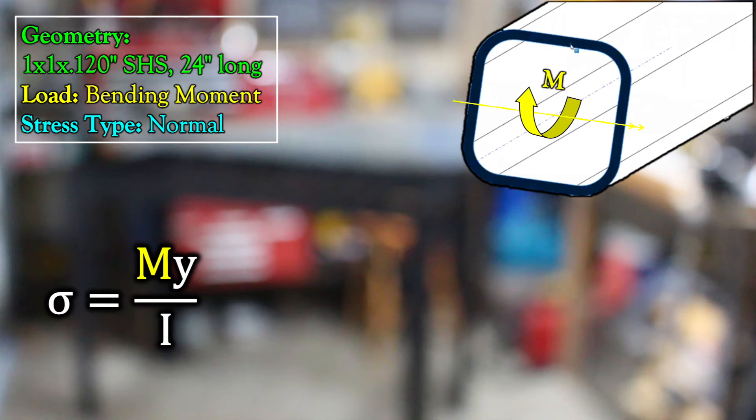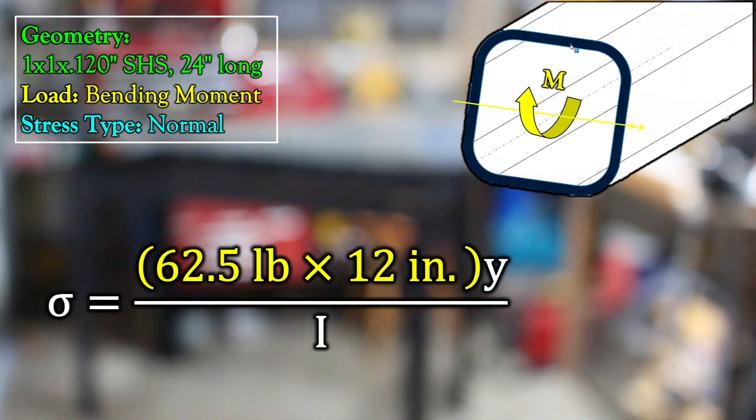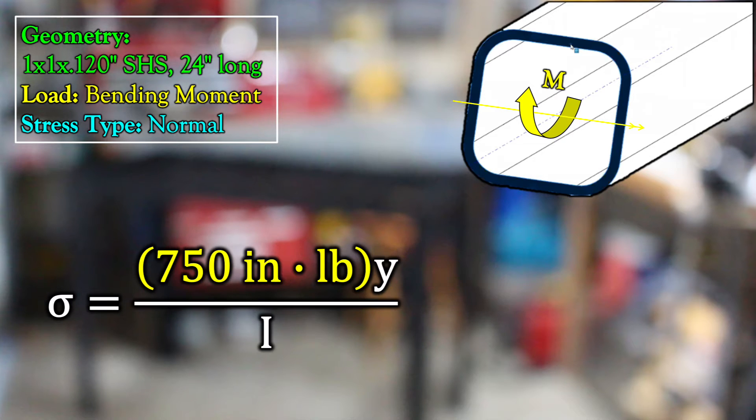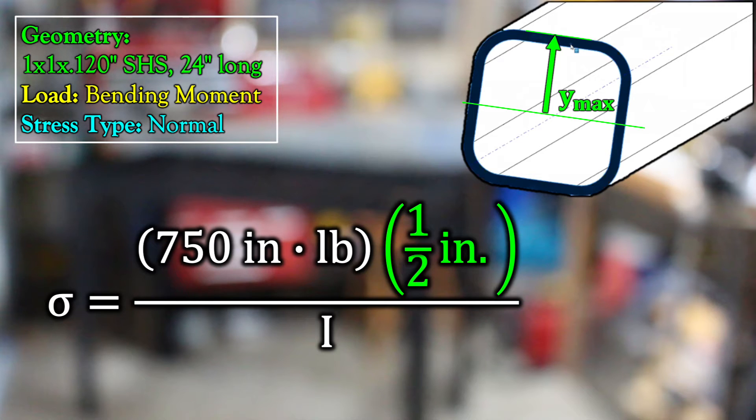The moment we found earlier was just 62.5 pounds times 12 inches, or 750 inch pounds. Y is the distance from the neutral axis. We're talking about failure here, so we want the maximum y value, which would be half an inch in our case.